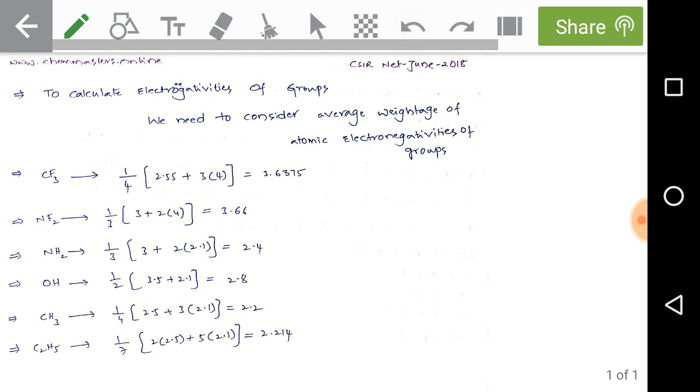Calculate for C2H5. We have seven atoms: 1/7 into [two carbons: 2×2.5, plus five hydrogens: 5×2.1] = 2.214. Check the electronegativity differences of CH3 and C2H5: 2.2 and 2.214. They have similar electronegativity values.